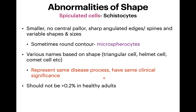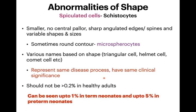Schistocytes should not be more than 0.2% in healthy adults. However, they can be seen up to 1% in term neonates and up to 5% in preterm neonates. It's important to remember this — I once mentioned hemolysis in a neonate without knowing it was a preterm baby. So when you see increased schistocytes, try to inquire about the patient's history. In a preterm neonate, up to 5% schistocytes is considered normal.